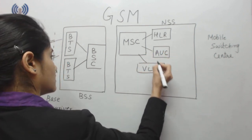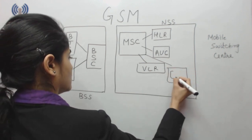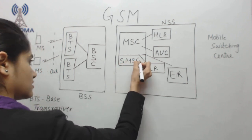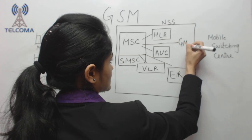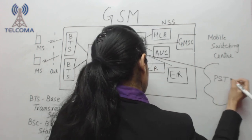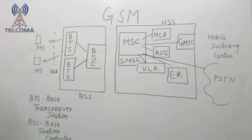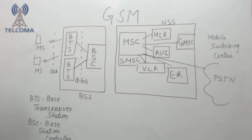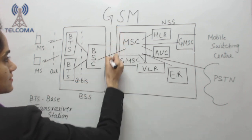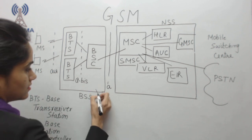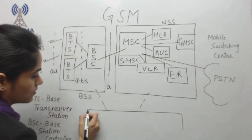The MSC is connected to databases including HLR, AUC, VLR, EIR, and SMSC, which is connected to GMSC. The BTS and BSC are connected via the Abis interface. The BSC is connected to the MSC via another interface. The BSS part and NSS part are both connected to OSS.